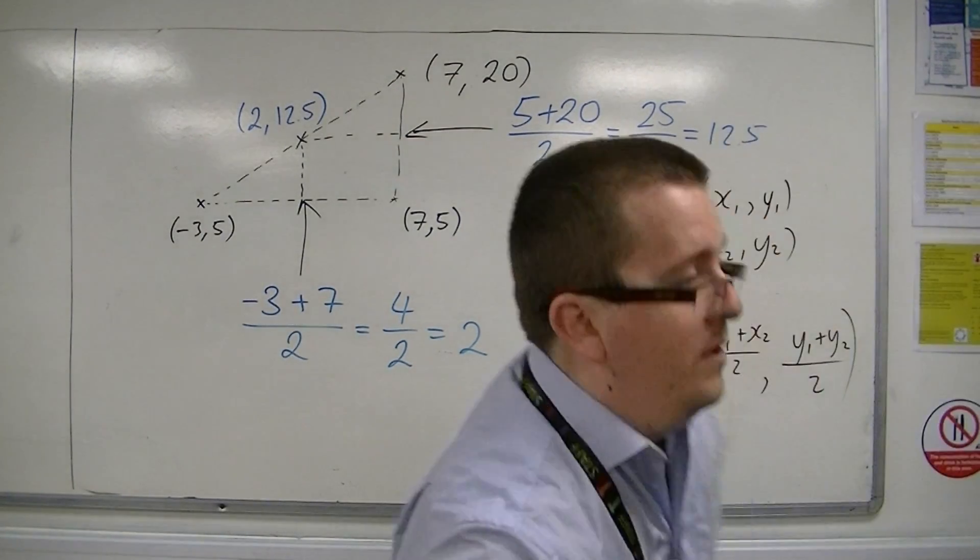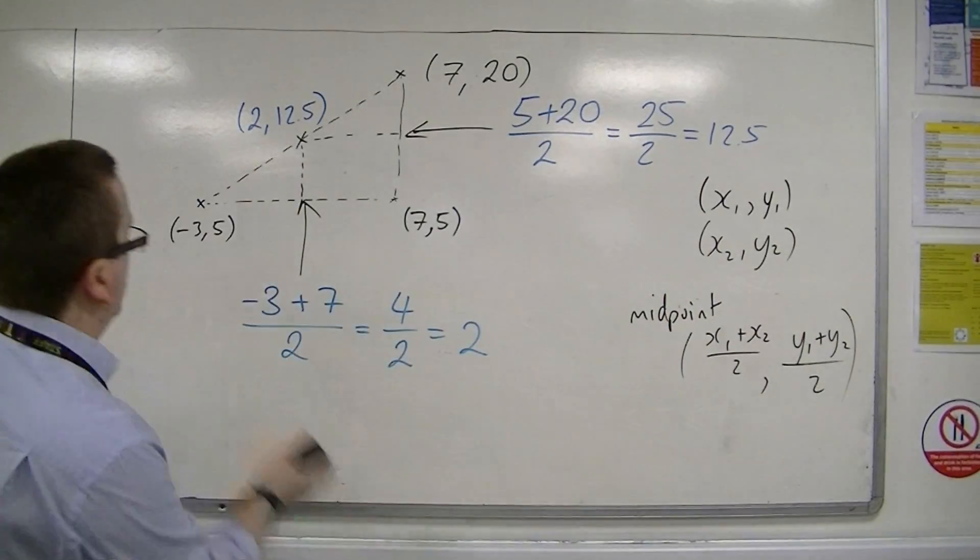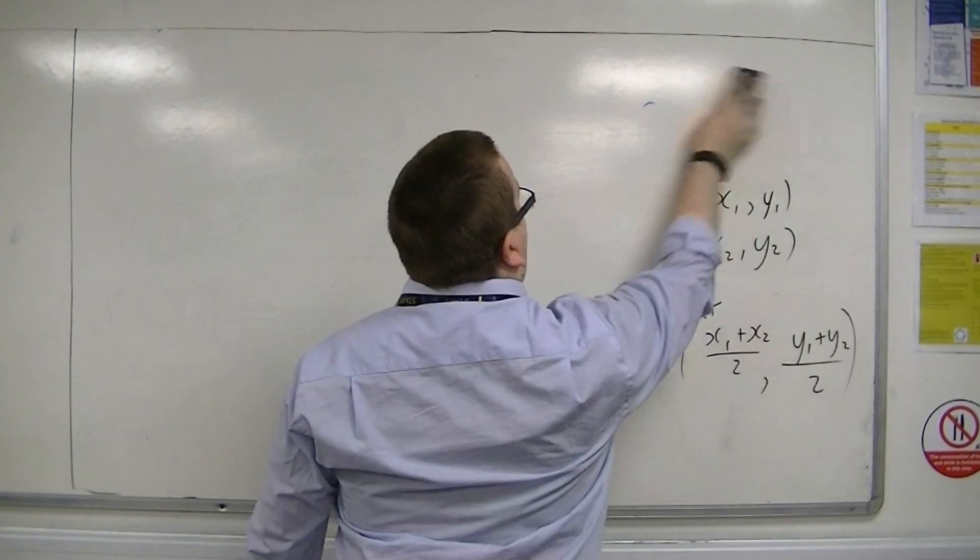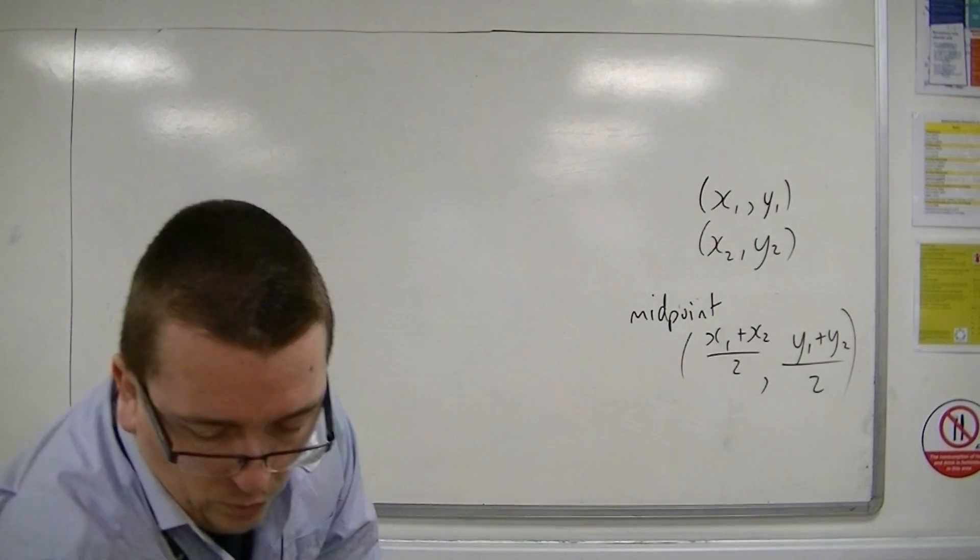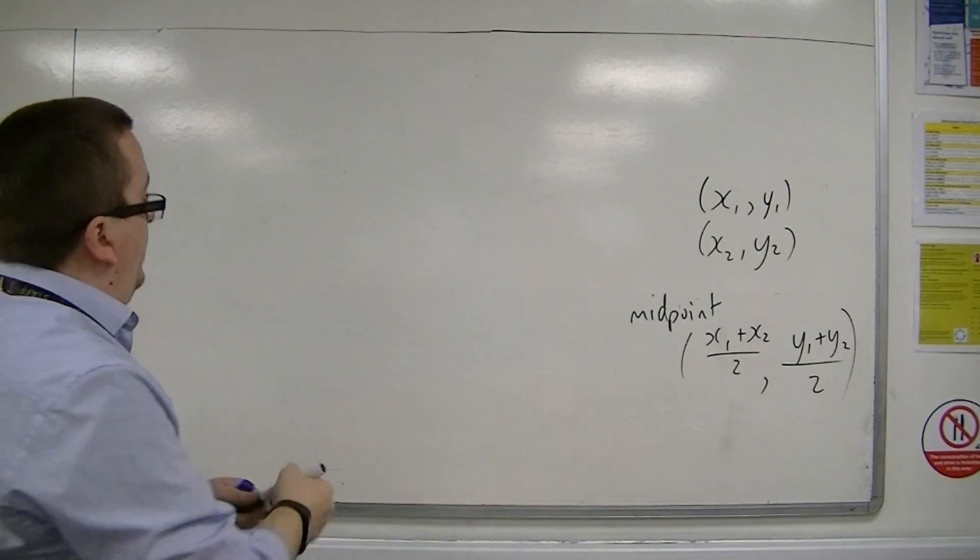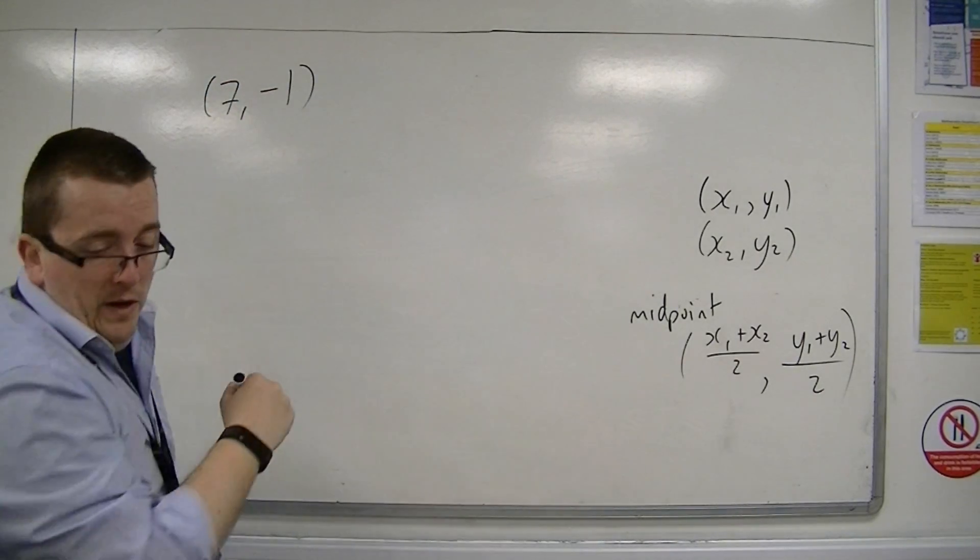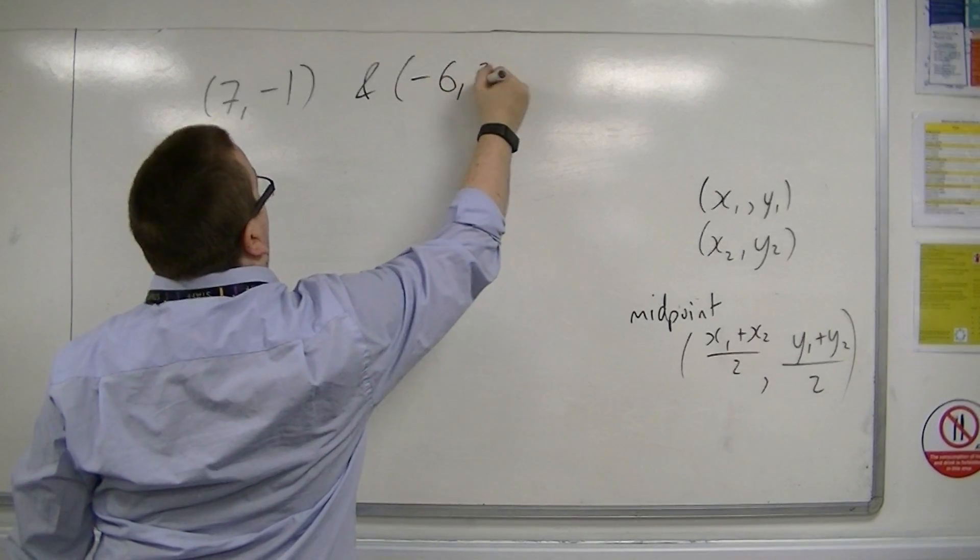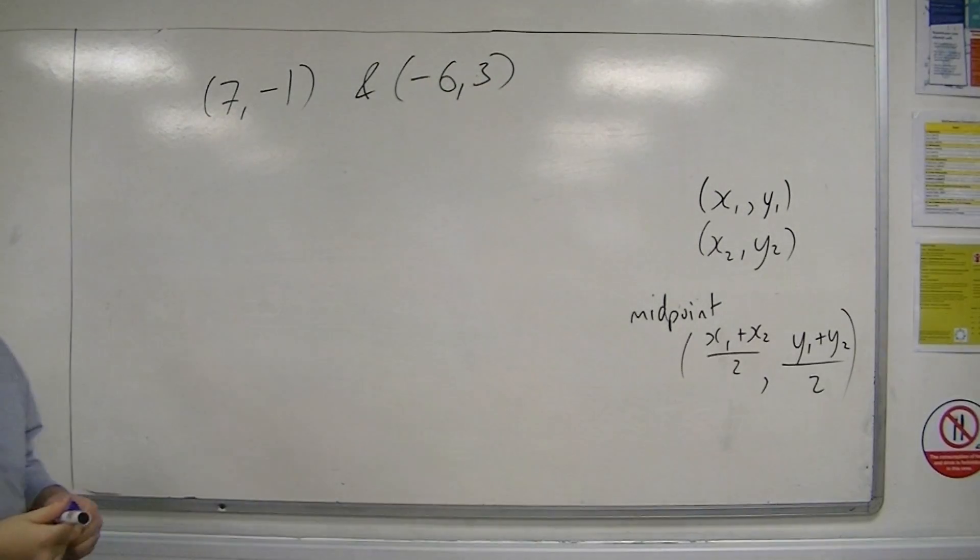So that means if I just come up with any old coordinates, let's say I've got the coordinates 7, minus 1, and minus 6, 3, and I want to find the midpoint between these two coordinates.